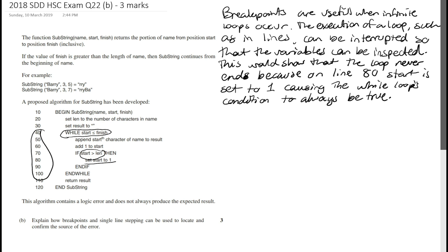It is important for start to be set to 1 when start is greater than length — particularly in the example where we want to get characters 3 to 7: if we reach the end of the string, we need to go back to the start and continue getting more characters. That's why this line of code checks if start is greater than length and sets start to 1. However, the code still needs to be modified to fix this infinite loop, and that's what we'll look at in the next part of this question.